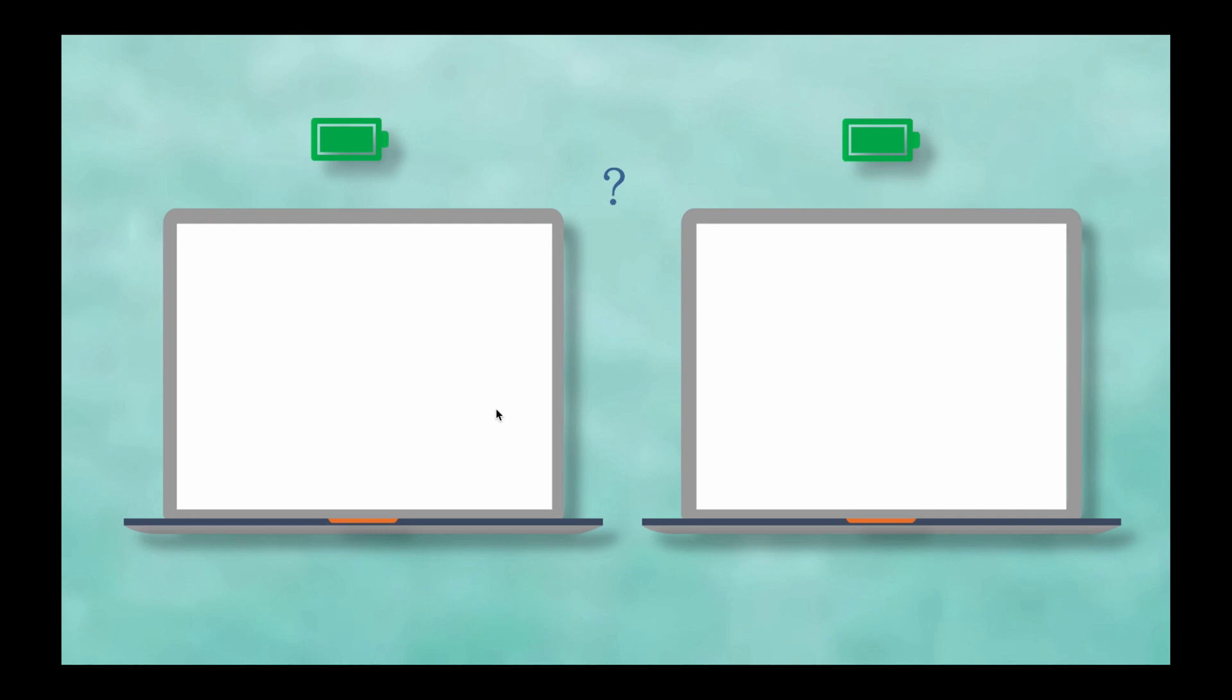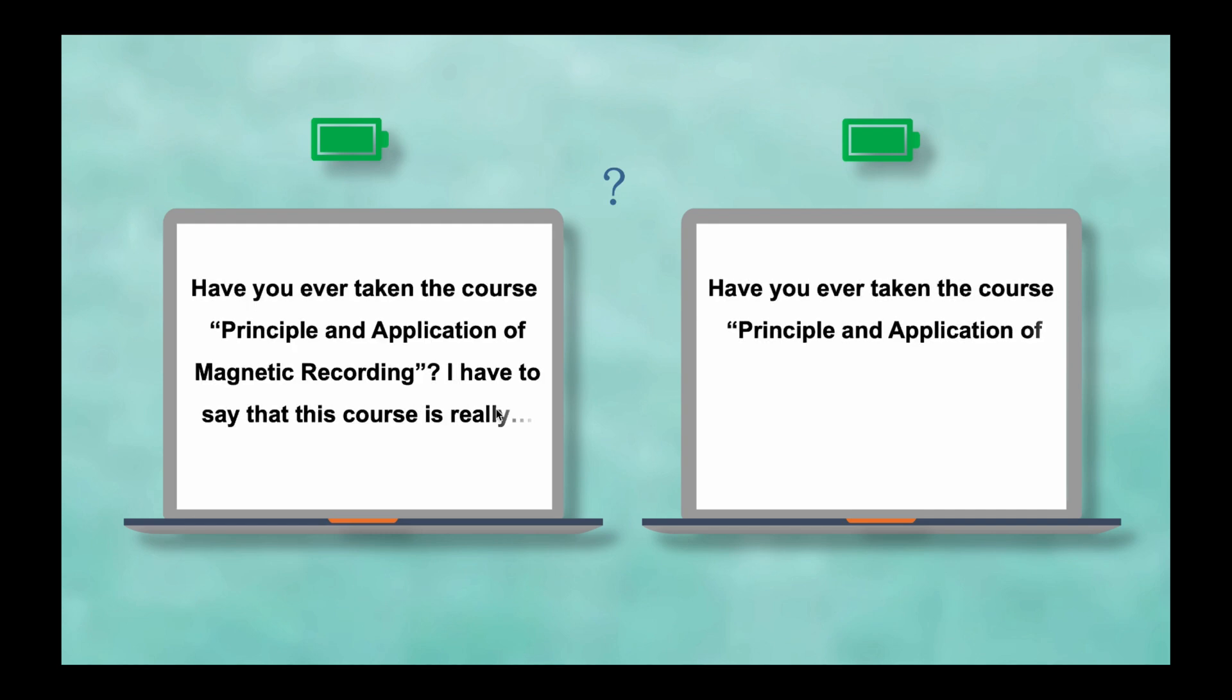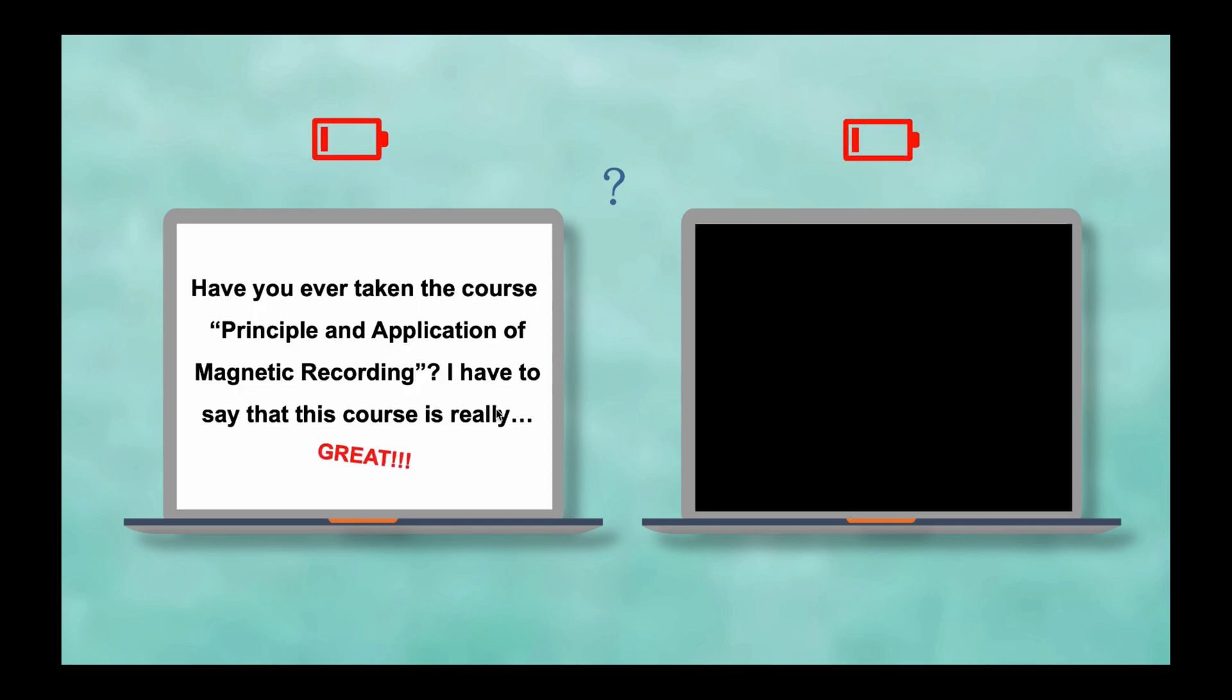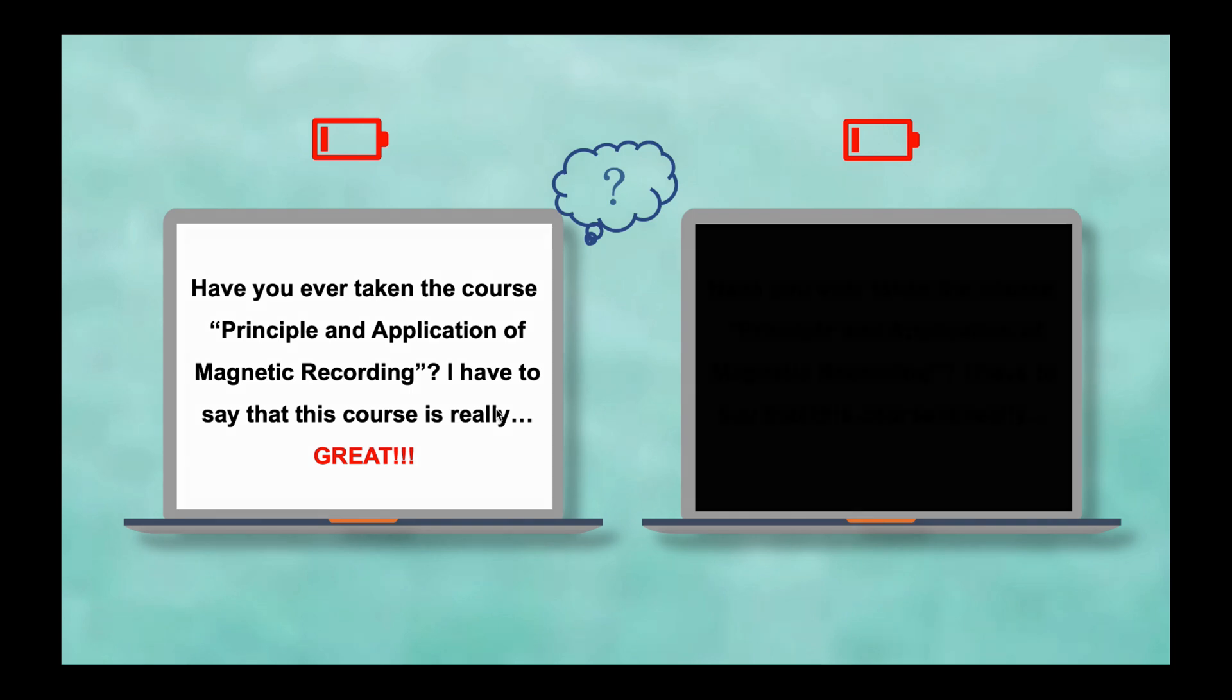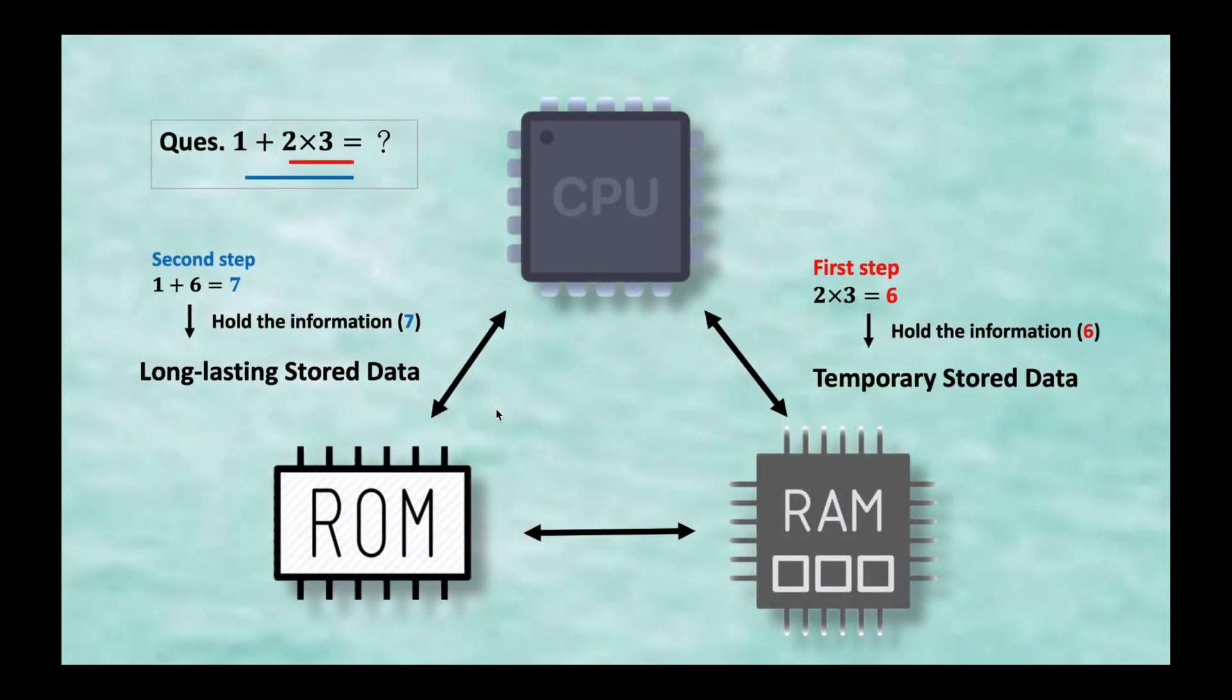So, the most important thing is volatility. Have you ever encountered a condition that when you are typing, doing an assignment, just before finishing it, your laptop just runs out of battery? Which means all the effort you did without saving is missing. This results from the RAM we use nowadays are mostly volatile.